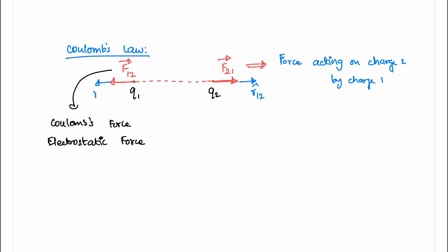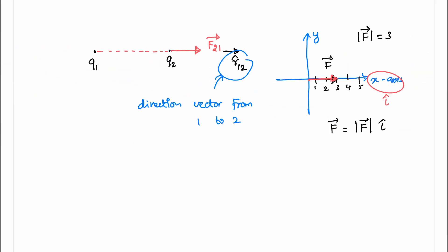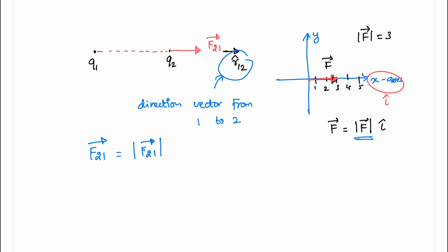R-cap 2,1 is the unit direction vector from charge 2 to charge 1. R-cap 1,2 is the unit direction vector from charge 1 to charge 2. Now, what we have to do is express the magnitude of the F21 vector. The direction of F21 vector is R-cap 1,2. So F21 vector equals the magnitude of F21 vector times the direction vector.